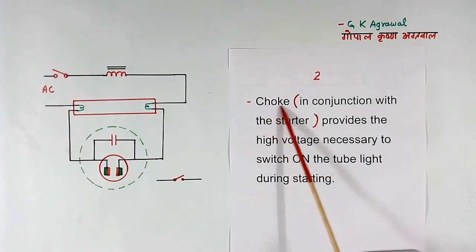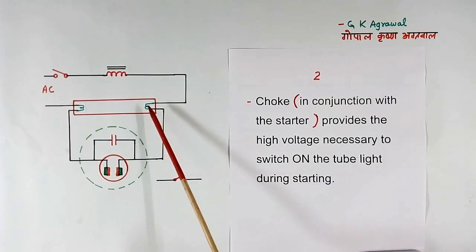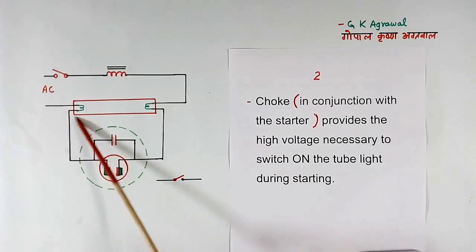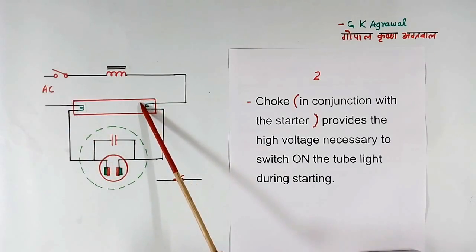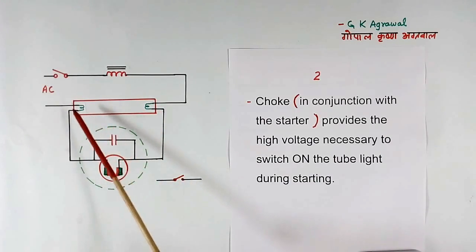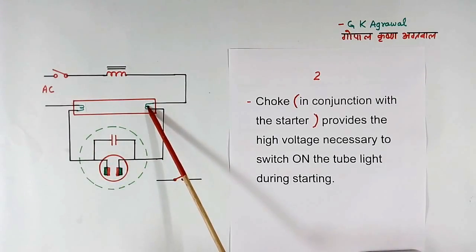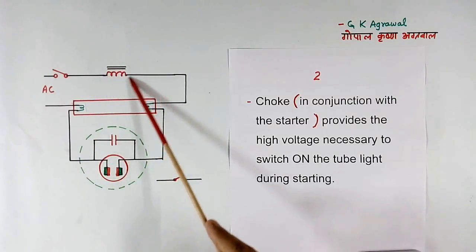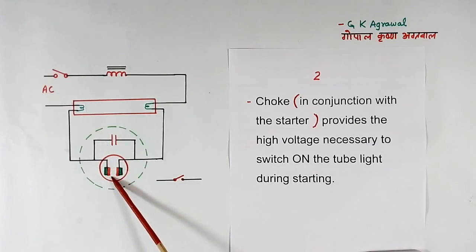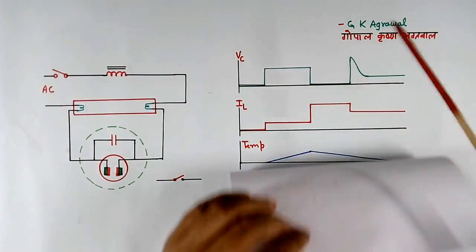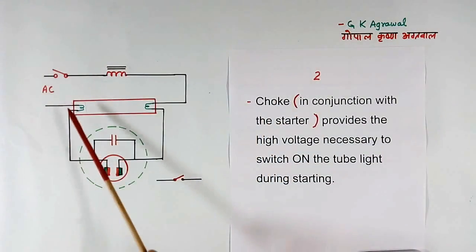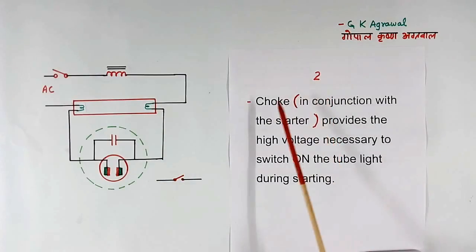Second function of choke is to provide the high voltage necessary to switch on the tube light during starting. This tube light requires high voltage for ionization purpose. Then only this can become on. So during starting, this choke and this contact together provide the high voltage here. Then only tube light becomes on. This is second function of choke.